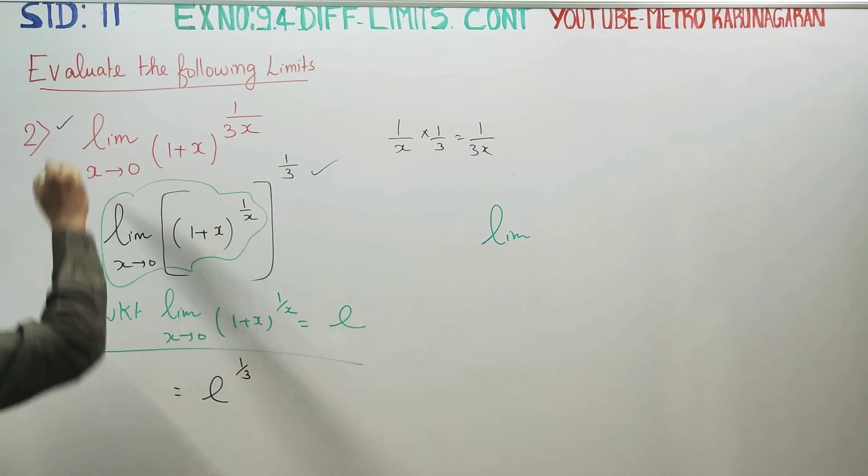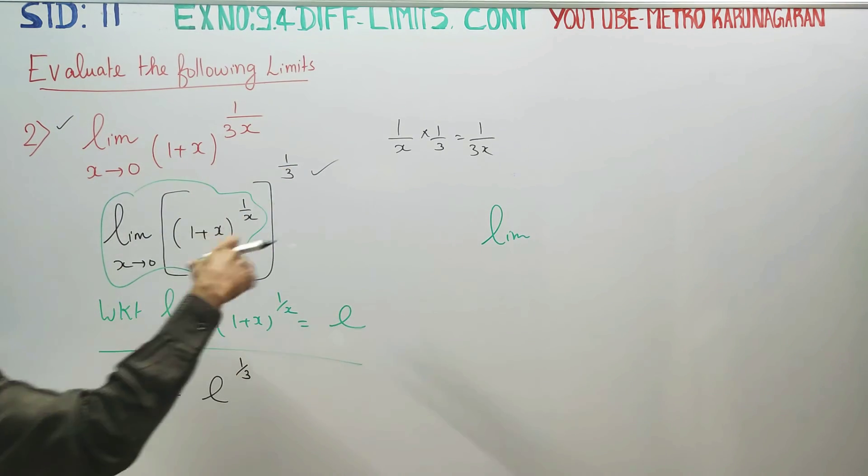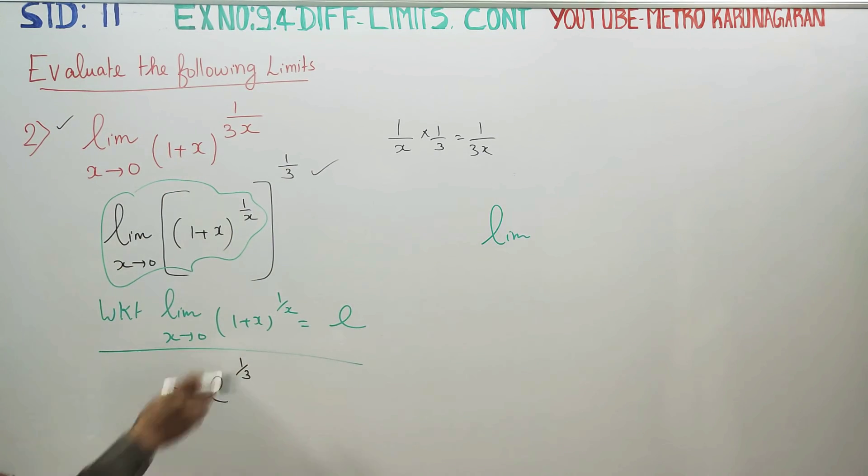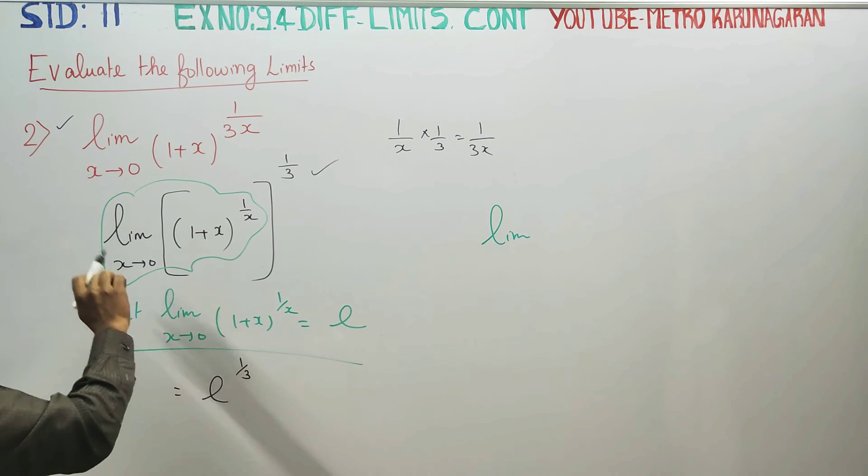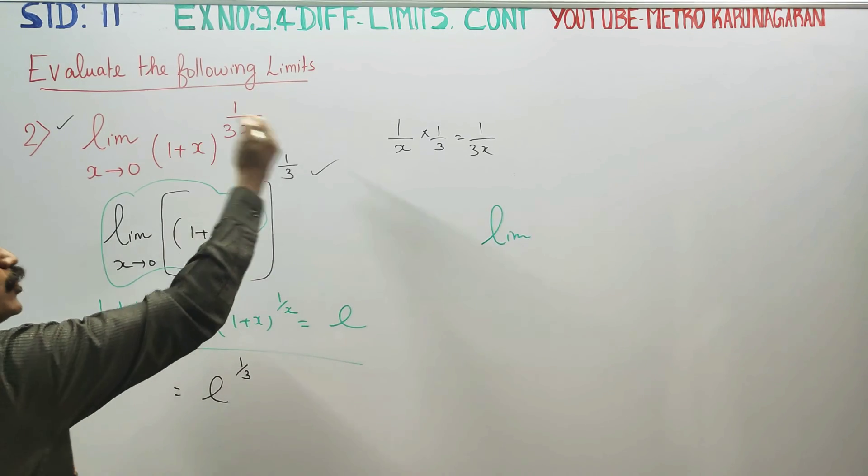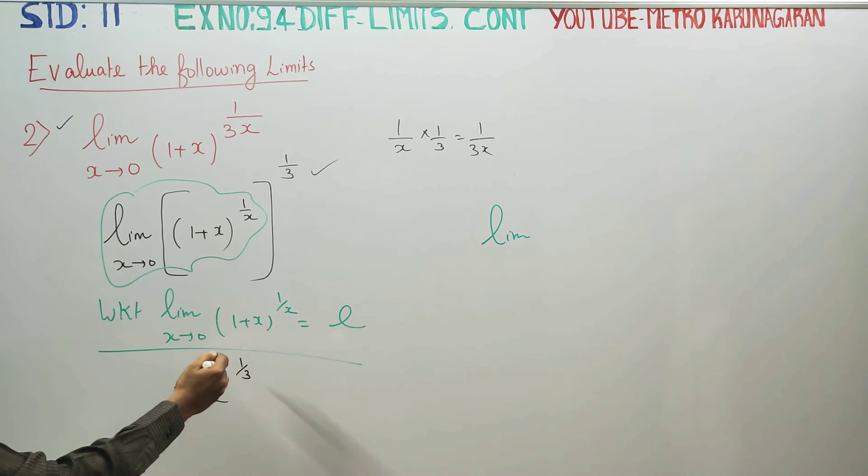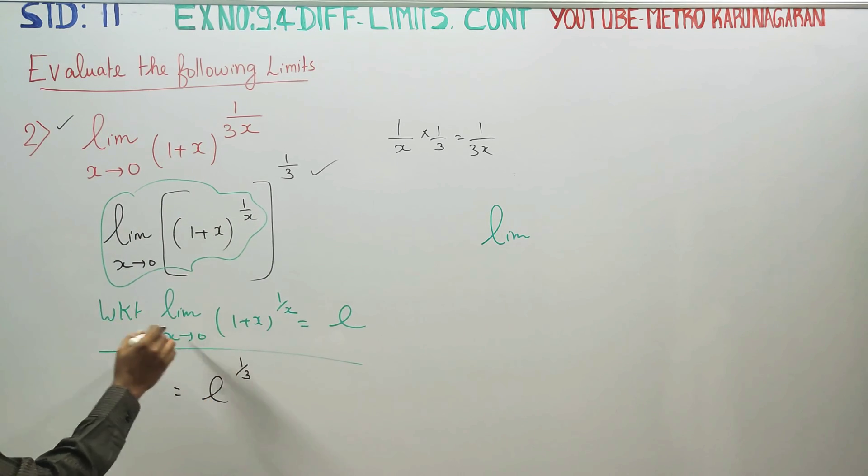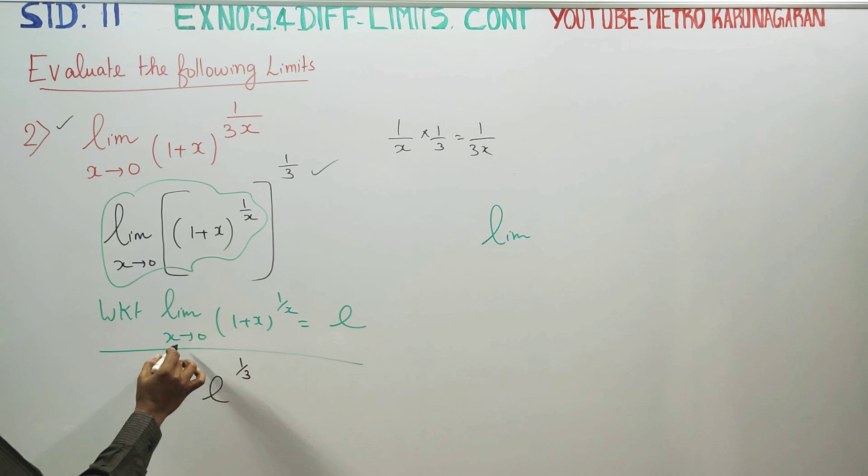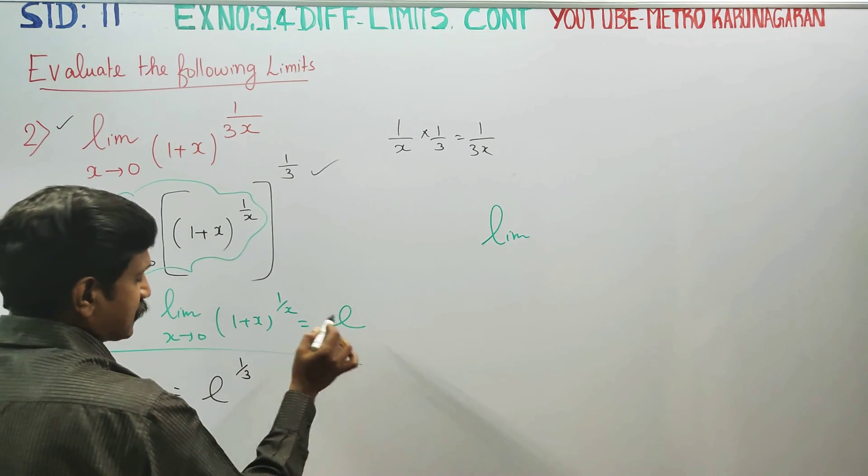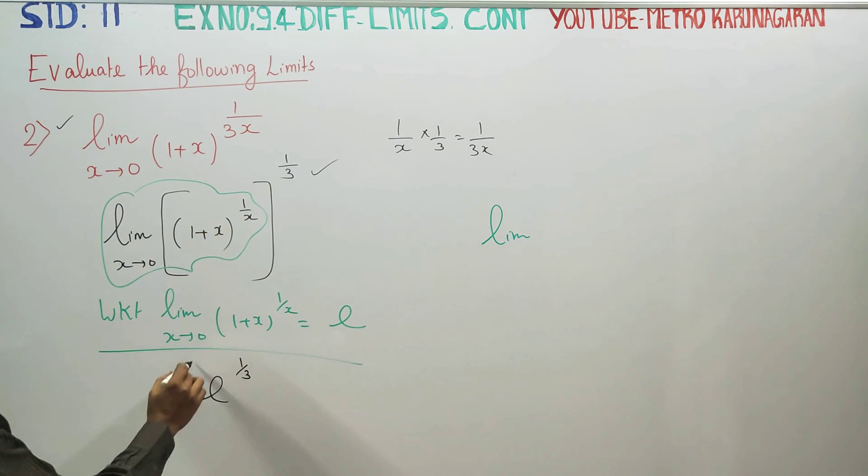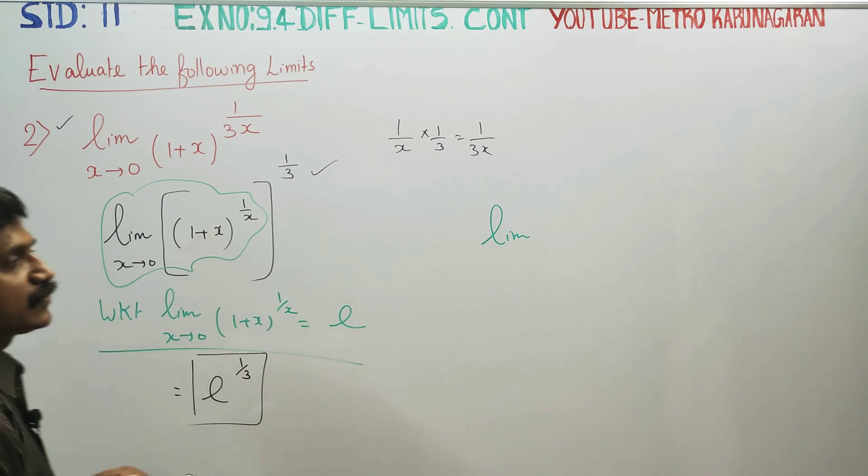First video, first sum number video, reference. All power 1 by 3 is 1 by 3. If you look at the question, all power 1 by 3. If you look at the function, all power 1 by 3. This is your required result.